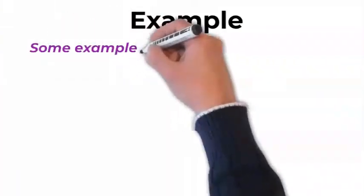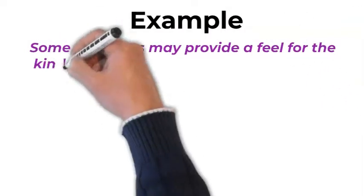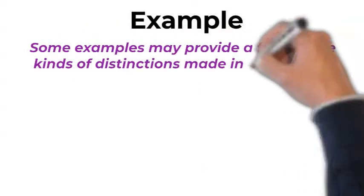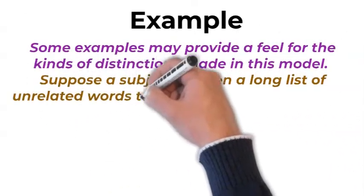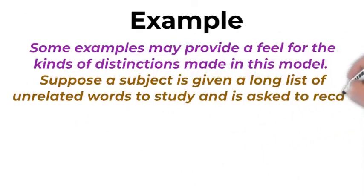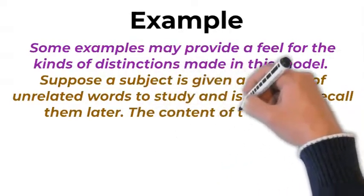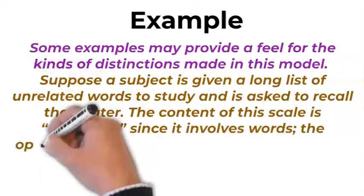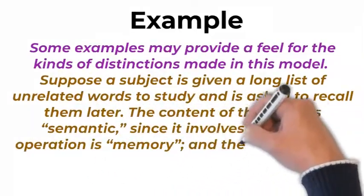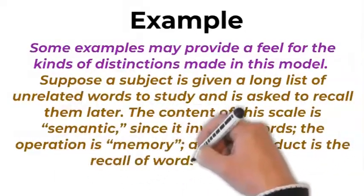Some examples may provide a feel for the kinds of distinctions made in this model. Suppose a subject is given a long list of unrelated words to study and is asked to recall them later. The content of this scale is semantic, since it involves words, the operation is memory, and the product is the recall of words as units.